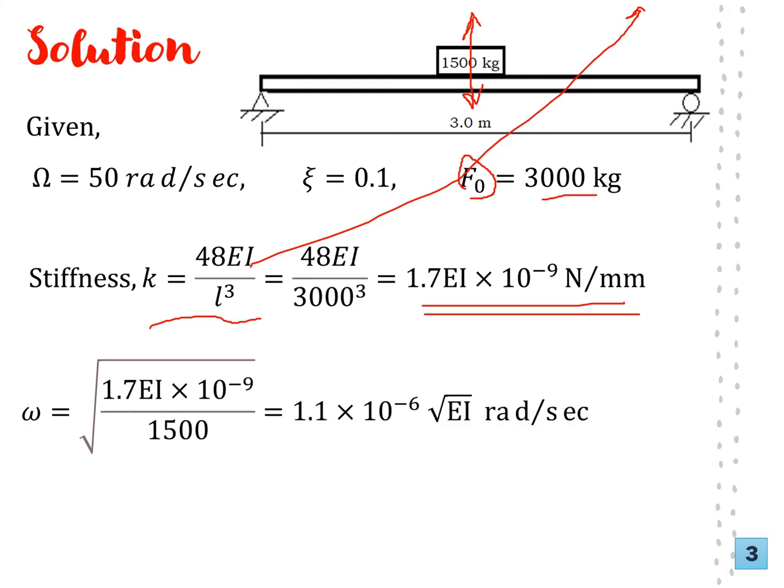Next step, what is the angular frequency? Angular frequency omega is the square root of kg over the weight, or another expression is the root of k over the mass. We get our expression for angular frequency ω = 1.1 × 10⁻⁶√EI rad/sec in terms of the flexural rigidity EI. Don't forget the units.